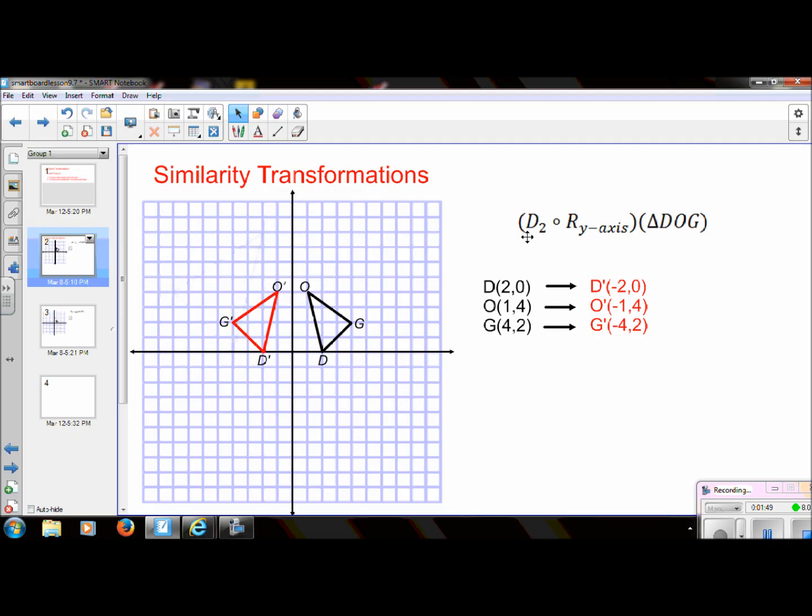And remember that this D stands for dilation, and this 2 tells me the scale factor. So I need to take all of these coordinates and multiply them by 2. So if I multiply all of these by 2, these are my new coordinates. So it's negative 2 times 2 is negative 4, or 2 times 0 is 0, negative 1 times 2 is negative 2, 4 times 2 is 8, and then so on.